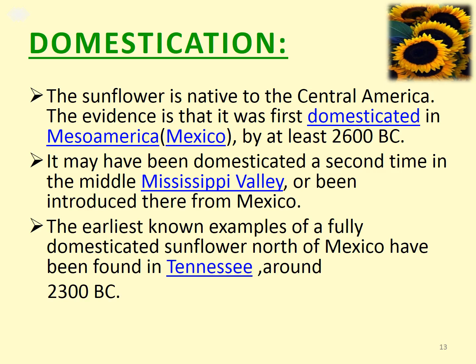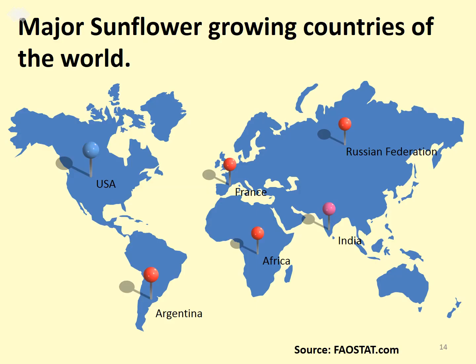Sunflower is native to Central America. The evidence indicates it was first domesticated in Mesoamerica, possibly Mexico, by at least 2600 BC. It may have been domesticated a second time in the middle Mississippi Valley or been introduced there from Mexico. The earliest known examples of a fully domesticated sunflower north of Mexico have been found around 2300 BC. Major sunflower-growing countries in the world are USSR, USA, India, Africa, France, and Argentina.